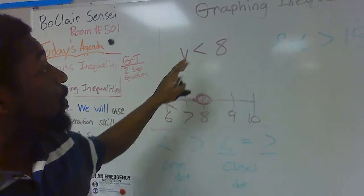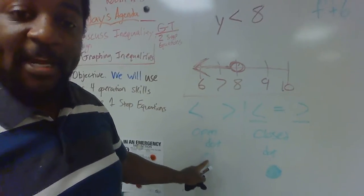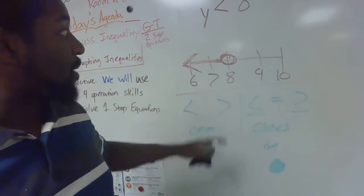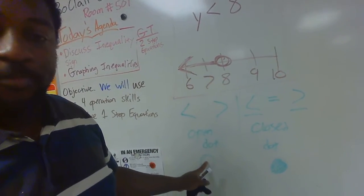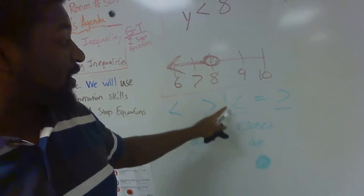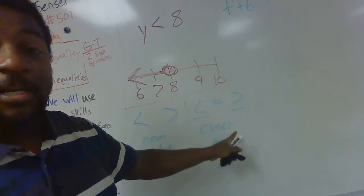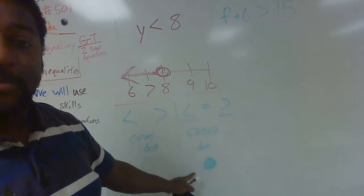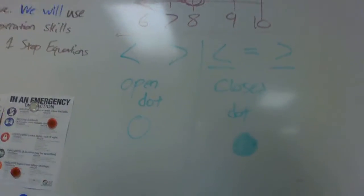It can be around that answer but it's not going to be equal to that answer. So remember, if you have a less than or greater than sign, those are going to be open circle or open dot. If you have the less than or equal to or greater than or equal to sign, those give you the closed dot like I have there. I'll give this to you to write down again real quick.